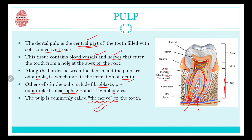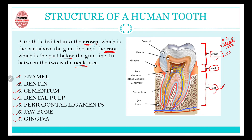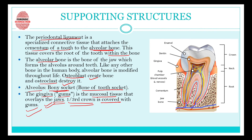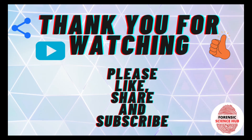I hope you understood the different parts of human teeth. A tooth is divided into crown, neck, and root. Then there are different structures like enamel, dentine, pulp, and cementum, and supporting structures like the periodontal ligament, alveolar bone, and gums. All the important points discussed in this video — you must remember them all. Thank you for watching.